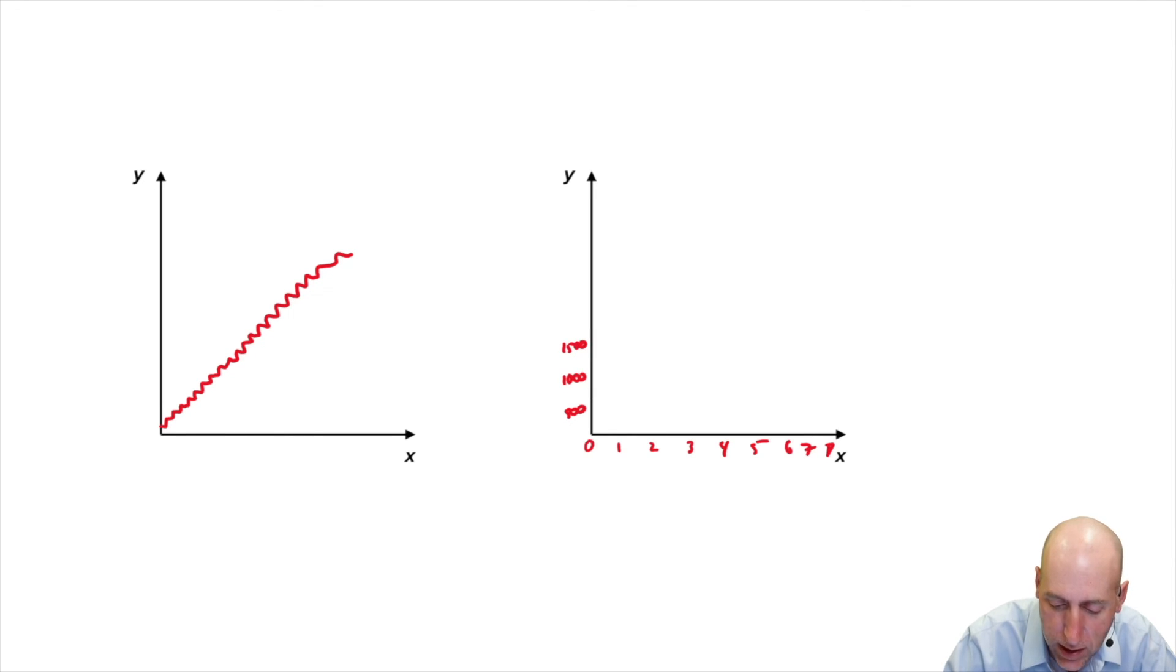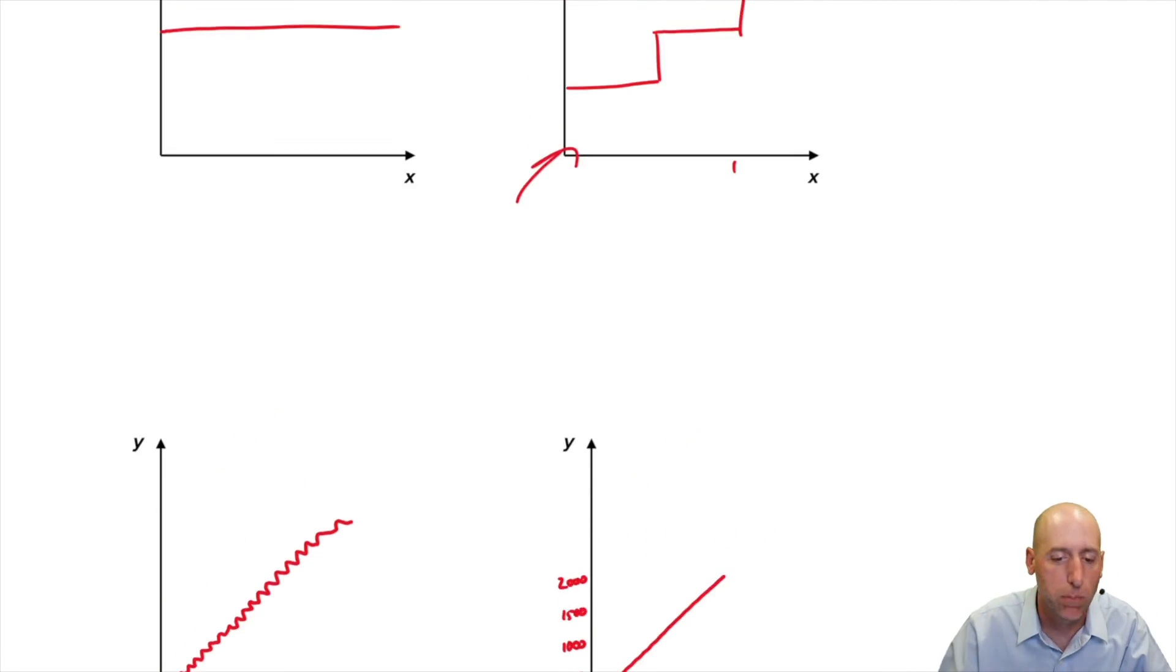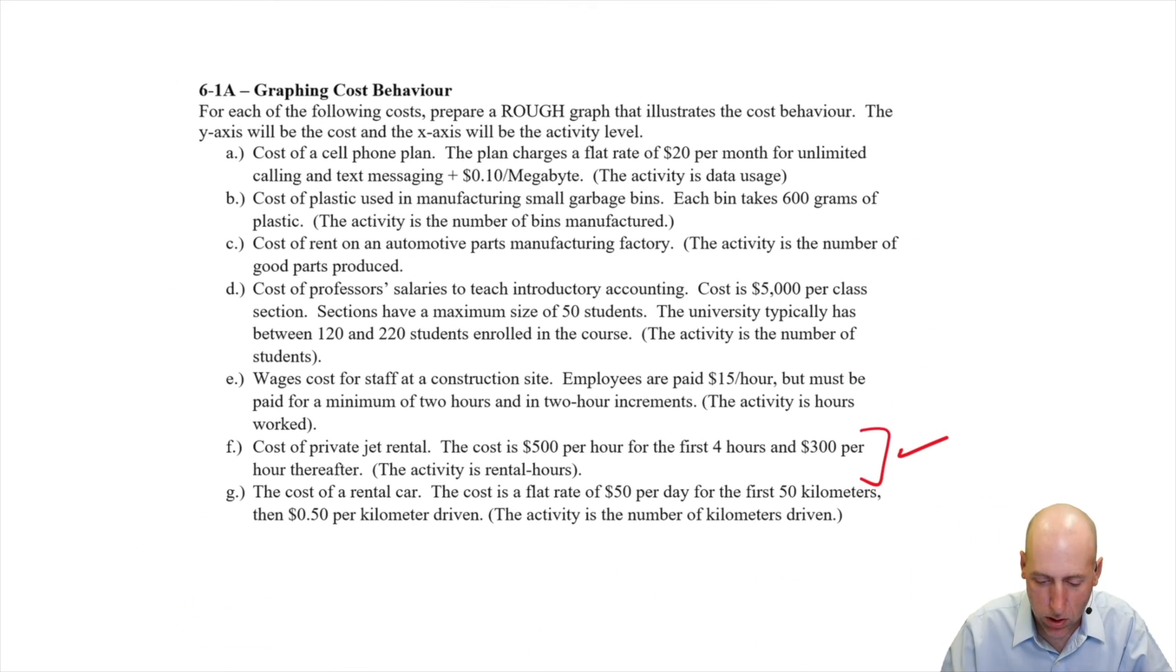It cost me $1,000 to get to hour two. Hour three cost me $1,500. Again, a three-hour flight, if I have three hours of activity, the cost is $1,500. If I have four hours of activity, the cost is $2,000. So this starts to look like a variable cost, right? Each hour is $500. It's sort of like the plastic in the garbage cans. Each garbage can is 600 grams of plastic, it's a dollar. Each hour flying is $500.